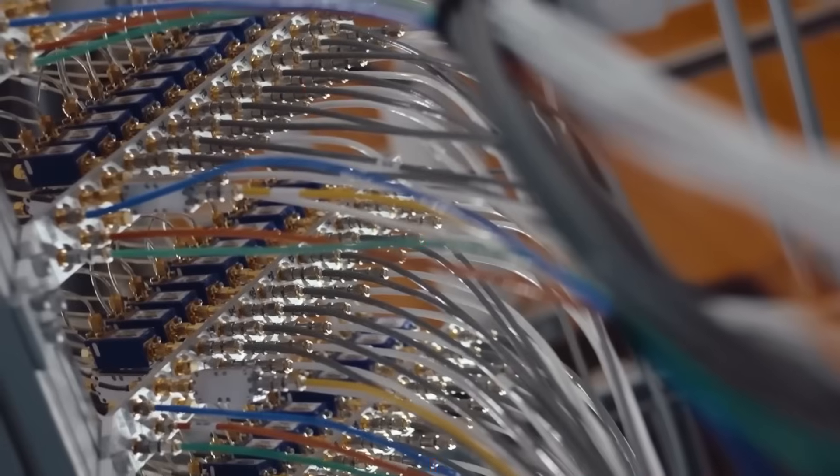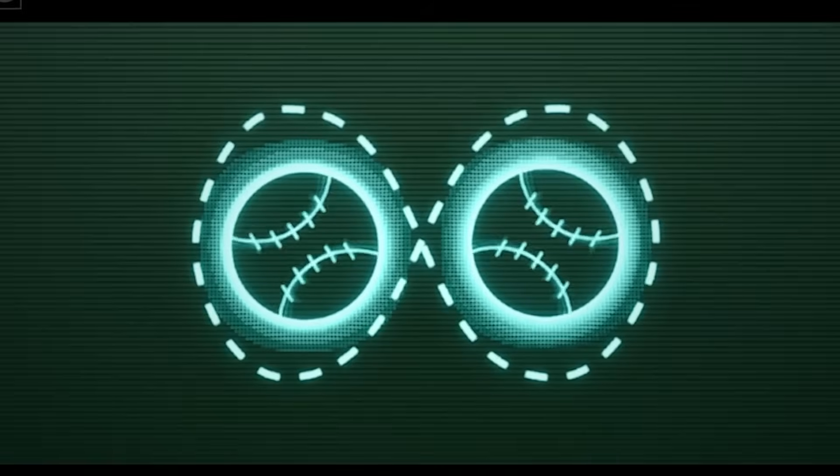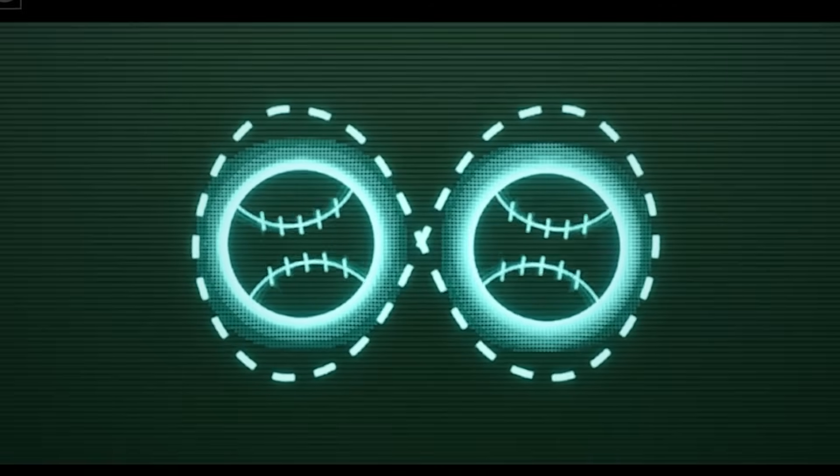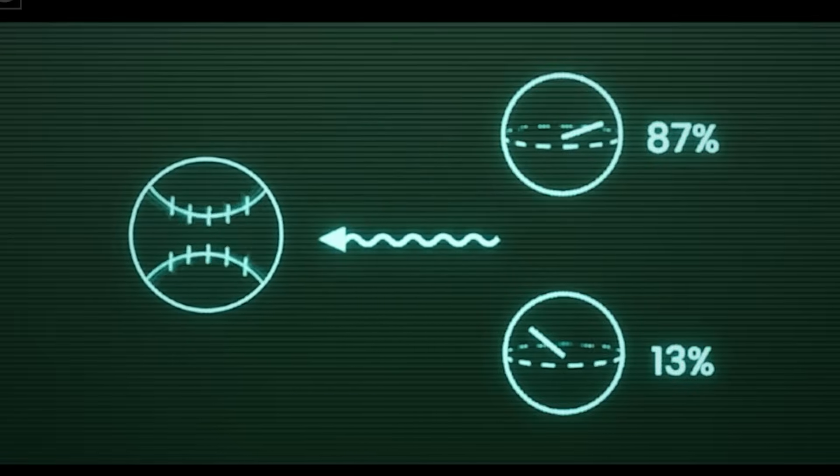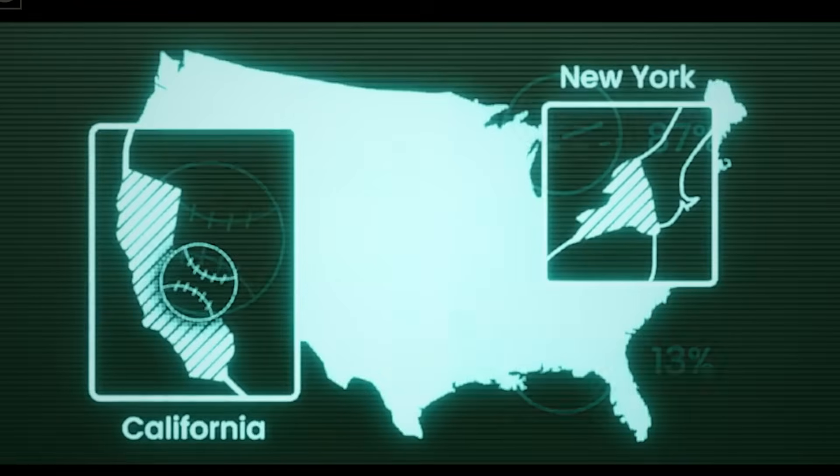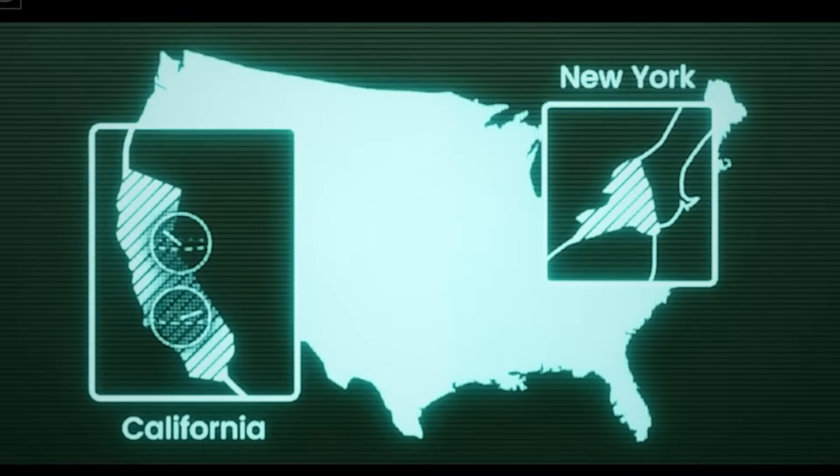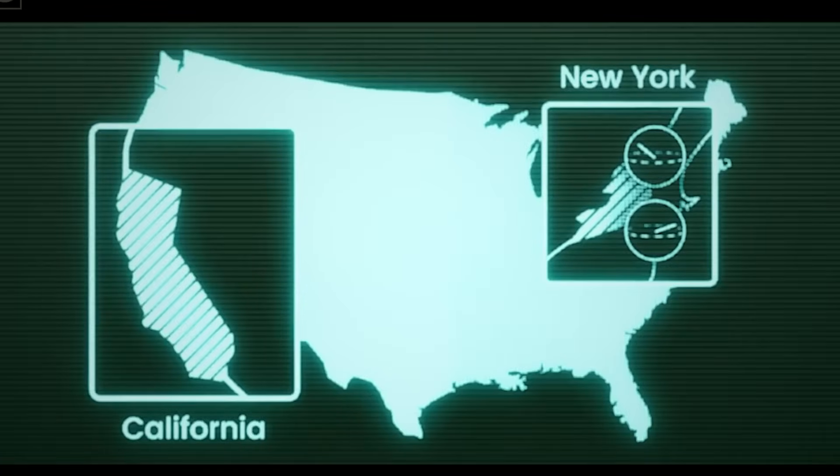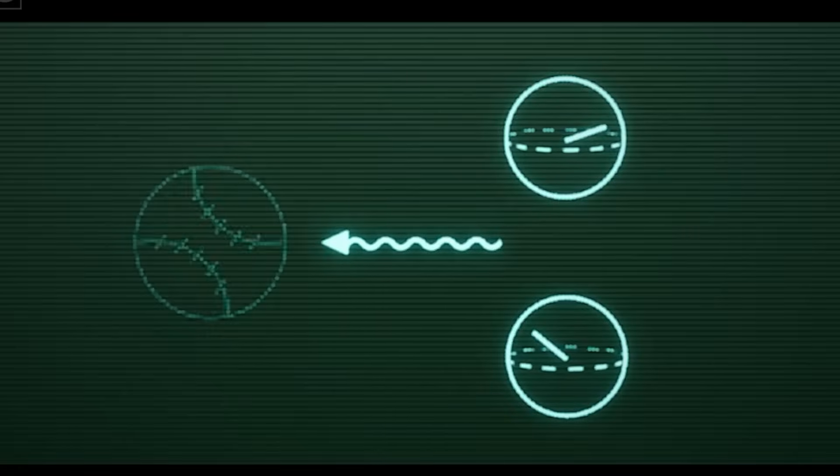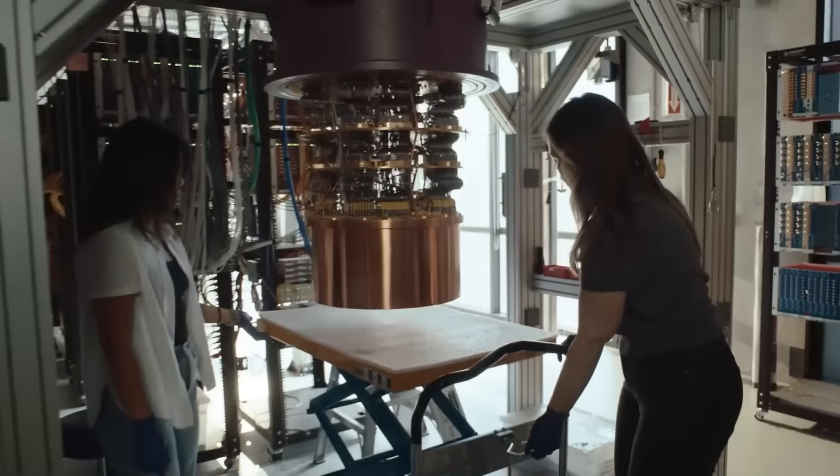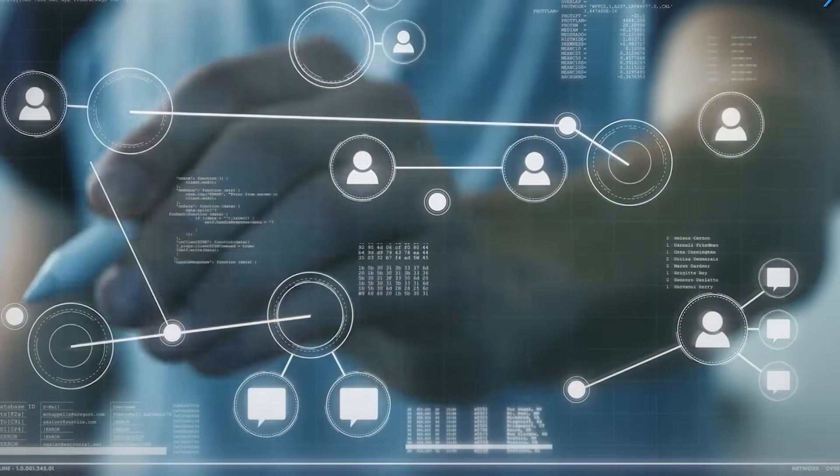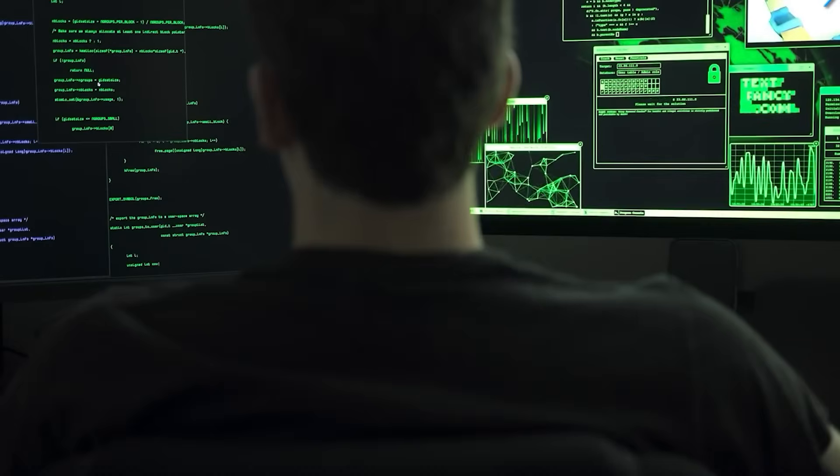But that's just the start. Qubits can also become entangled. This means that the state of one qubit is directly linked to the state of another, even if they're separated by vast distances. Einstein famously referred to this phenomenon as spooky action at a distance. It's like having two perfectly synchronized dice. Roll one in New York and the other in Tokyo mirrors it instantly. This level of interconnectedness allows quantum computers to perform calculations that classical systems simply can't handle.